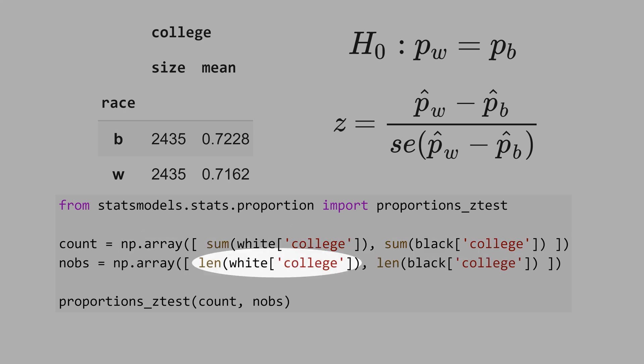Here is the number of observations of white people with college degree, and here is the same but for black people. We store the information in the variable number of observations, and we pass this number of observations here, and we do the same for count.